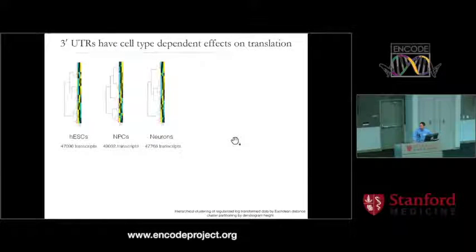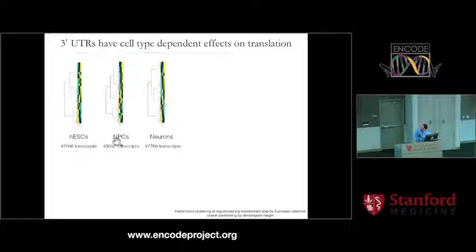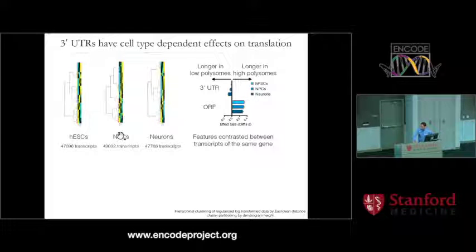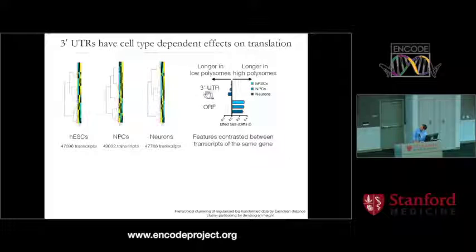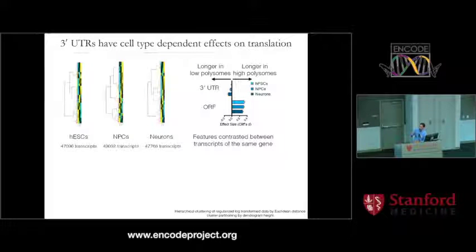In 293 cells I saw a strong effect from three-prime UTRs, and I can do the same analysis in ES cells, neuroprogenitor cells, and neurons by clustering transcripts and comparing two transcript isoforms derived from the same gene to see what features differ. In 293 cells there was a strong three-prime UTR effect, but in these cell types I see a cell-type specific effect: the length of the three-prime UTR in human embryonic stem cells has essentially no effect on translation, while in neuroprogenitor cells and neurons, as you differentiate along the neuronal trajectory, three-prime UTRs are increasingly more powerful at regulating translation.